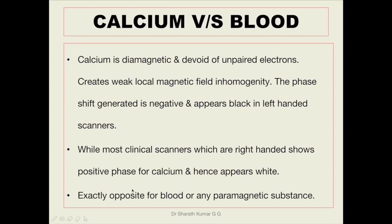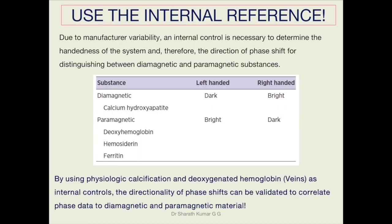This signal is exactly opposite to the signal created for blood or any paramagnetic substance like iron. We have to use internal reference because of manufacturer variability and handedness of the system, and therefore it helps in distinguishing between diamagnetic and paramagnetic substances. Calcium hydroxyapatite on left-handed scanners appears dark, and on right-handed scanners it appears bright.